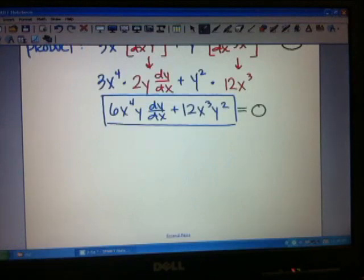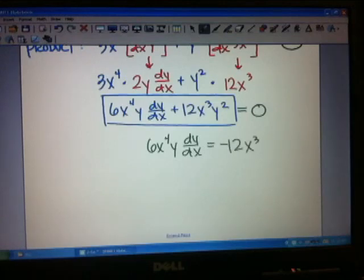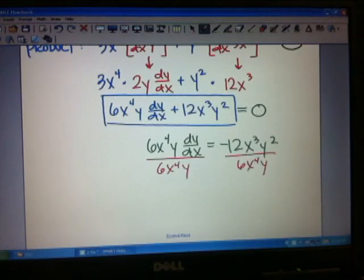So my next move would be to take the 12x cubed y squared over to the other side. So that's going to be now negative 12x cubed y squared. And then I'm going to divide both sides by 6x to the 4th y. And I would get that dy/dx is equal to now negative 2y up on top and x on the bottom.